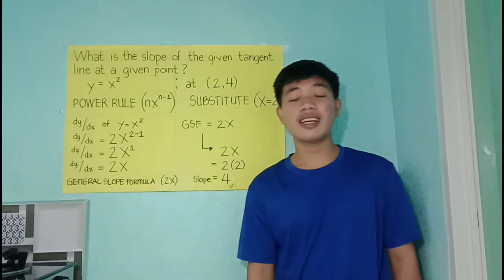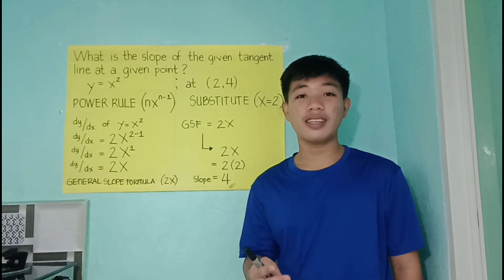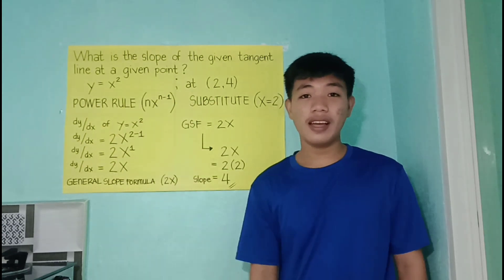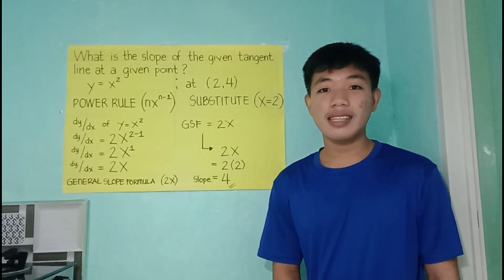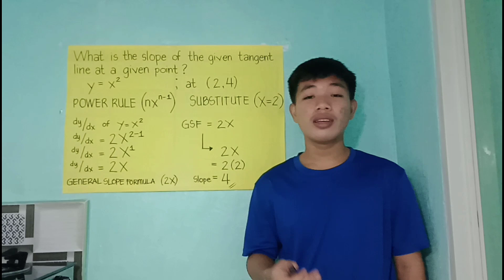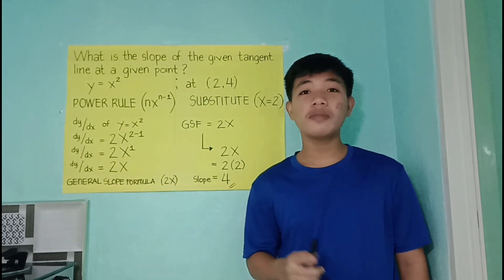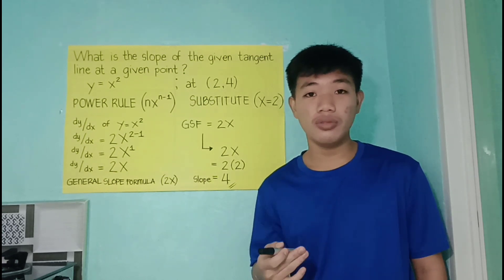So in answering these kinds of problems we must have two things to prioritize. First is that we must have a tangent line. Second we must have a point. So our point is (2, 4) but we'll only be using 2 on later substitution, so the x value.